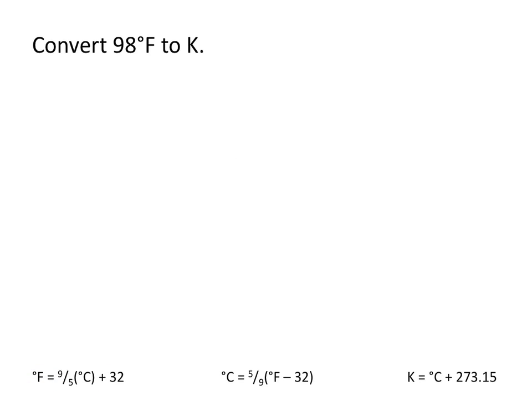Let's try another example. Convert 98 degrees Fahrenheit to Kelvin. Because there is no direct conversion from Fahrenheit to Kelvin, we would first need to convert our temperature in Fahrenheit to Celsius, and then from Celsius to Kelvin.